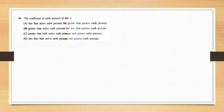The coefficient of earth pressure at rest — active earth pressure is associated with expansion of the soil and is the minimum lateral pressure, while passive earth pressure is associated with compression and is the maximum. In its natural state, a soil element at depth is not subjected to any strain — this is the at-rest condition, and the corresponding lateral pressure is the earth pressure at rest. The answer is option B: the coefficient of earth pressure at rest is greater than active but less than passive earth pressure.